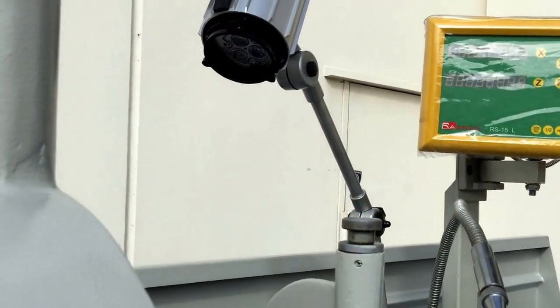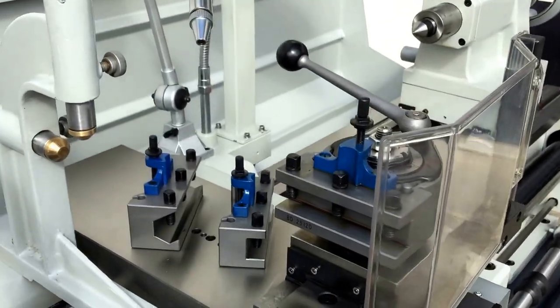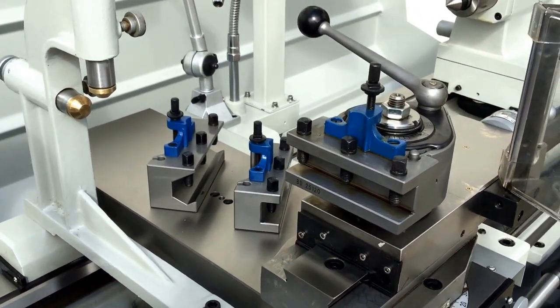LED work light is standard on all of our lathes, two axis Easson digital readout and phase fully universal quick change tool post with three holders.